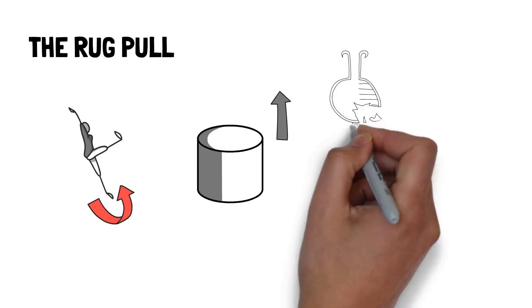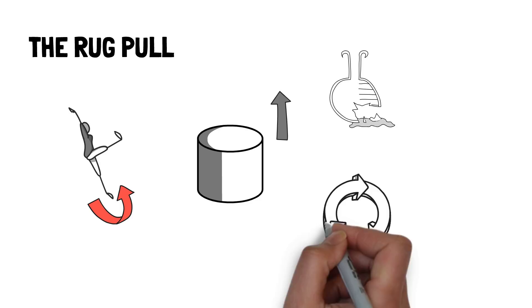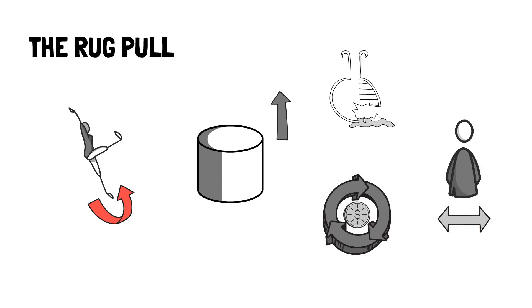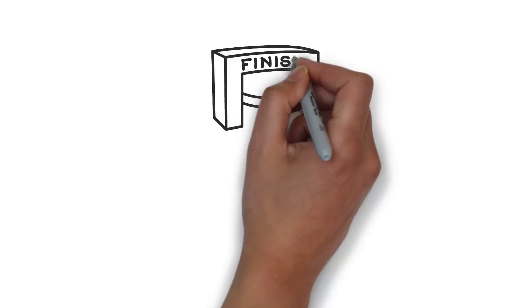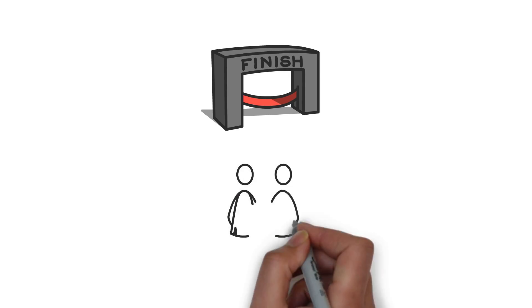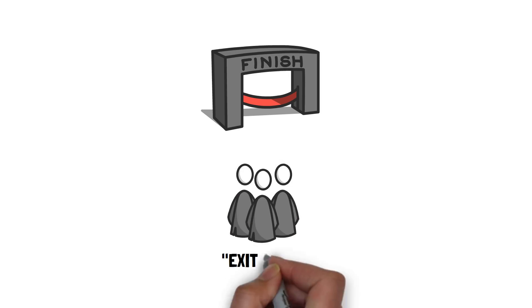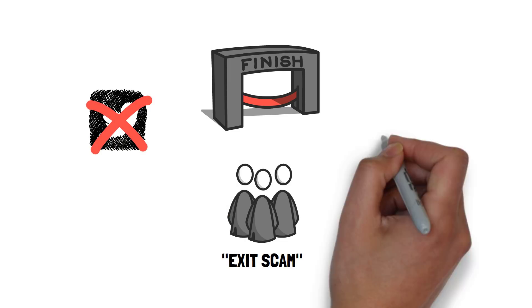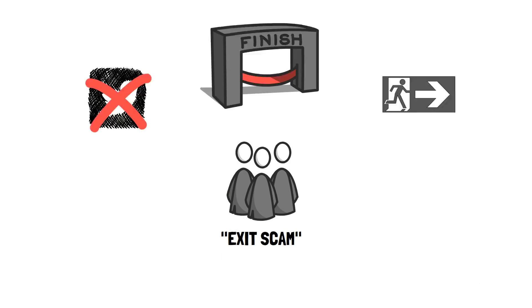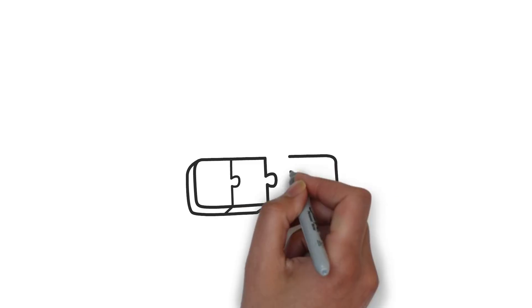The sudden loss of liquidity can create a death spiral for the token as token holders try to sell as fast as possible in order to save their profits. To Ragpull is usually the final move from a malicious team and is a common form of exit scam, where the protocol deletes all traces of social media as they try to escape with the funds.